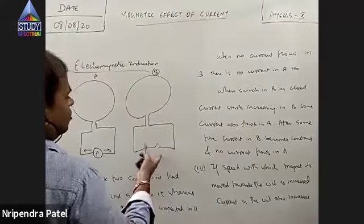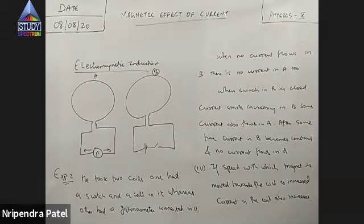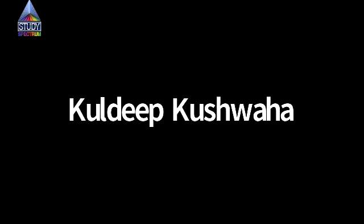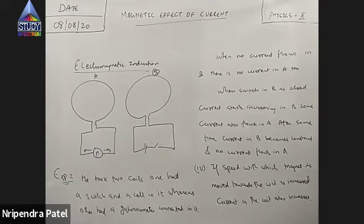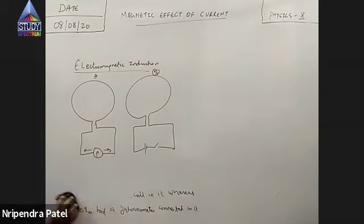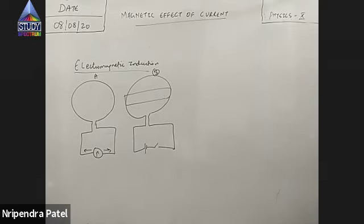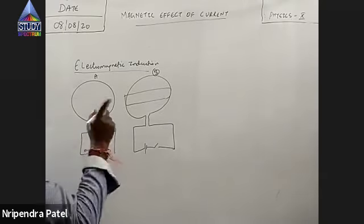When the switch was open, there was no current. When B's switch is closed, current flows in B, and A also shows a current. After a short time it becomes constant, and A's current becomes zero. If the switch is turned off, current flows again in A but in the opposite direction, and then it goes to zero again.